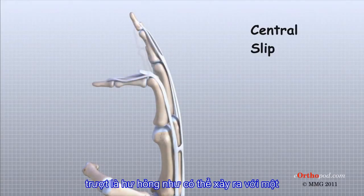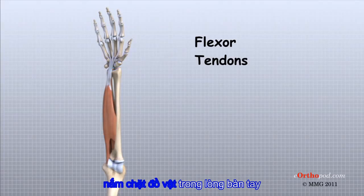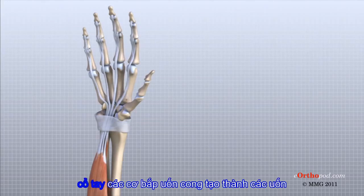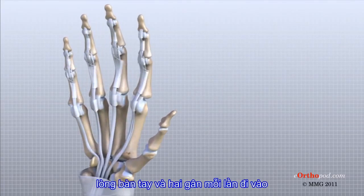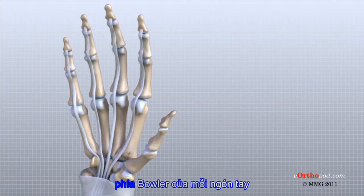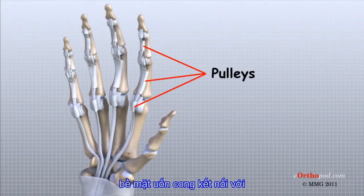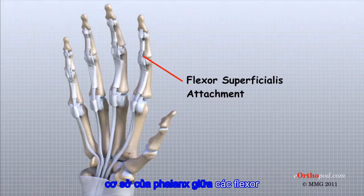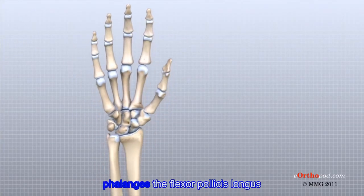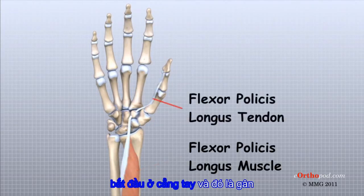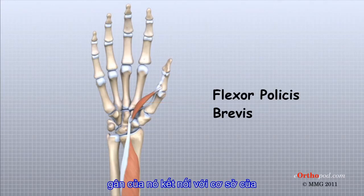Problems occur when the central slip is damaged, as can happen with a tear. The flexor tendons allow the fingers and thumb to flex or bend to grip objects in the palm of the hand. The strong flexor muscles begin in the forearm, and just before they enter the wrist, the flexor muscles form the flexor tendons. The flexor tendons travel through the carpal tunnel, through the palm, and two tendons each travel into the palmar side of each finger. These two tendons — the flexor superficialis and flexor profundus — travel through a special tunnel formed by a series of specialized ligaments that form pulleys. The flexor superficialis connects to the base of the middle phalanx, and the flexor profundus tendon connects to the base of the distal phalanx. The thumb is a bit different since it only has two phalanges. The flexor pollicis longus begins in the forearm and its tendon connects to the base of the distal phalanx of the thumb. The flexor pollicis brevis muscle begins in the wrist and its tendon connects to the base of the proximal phalanx of the thumb.